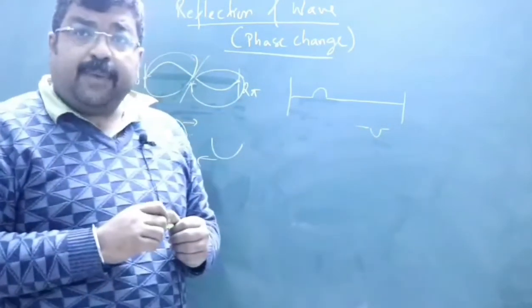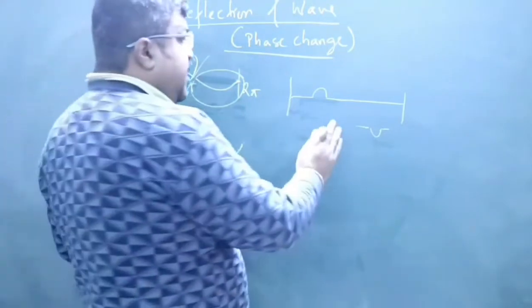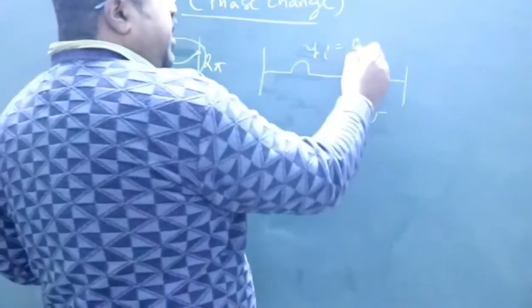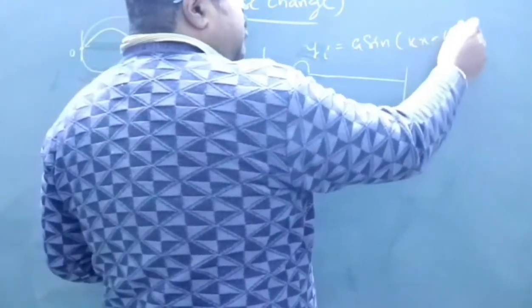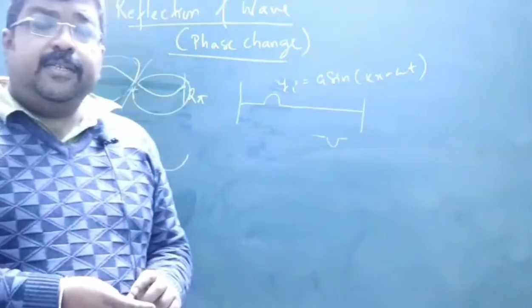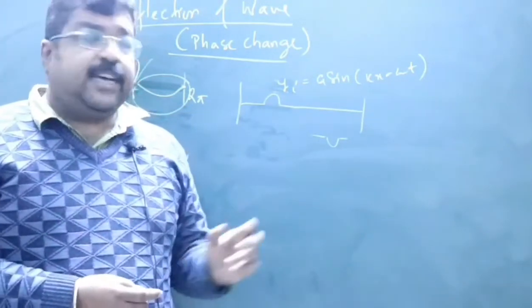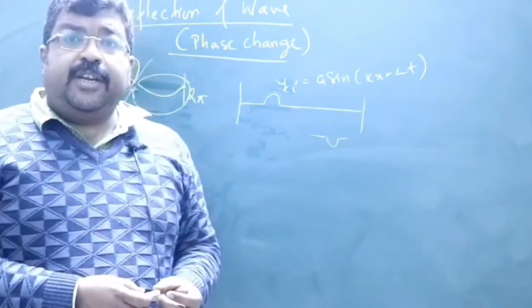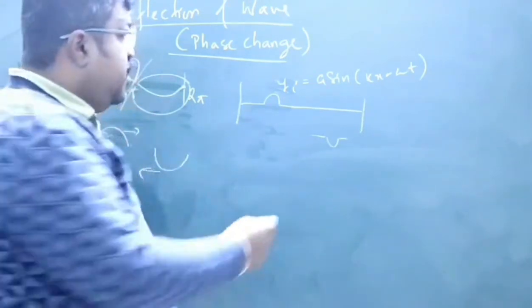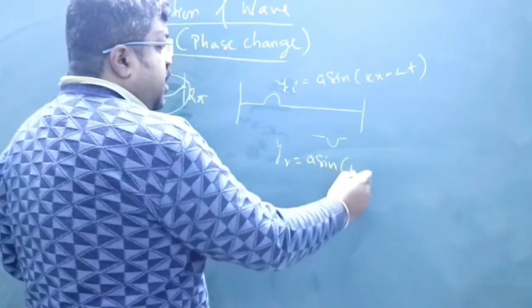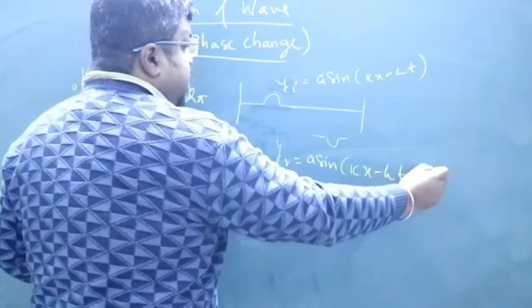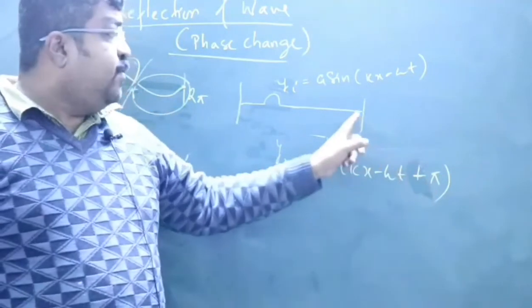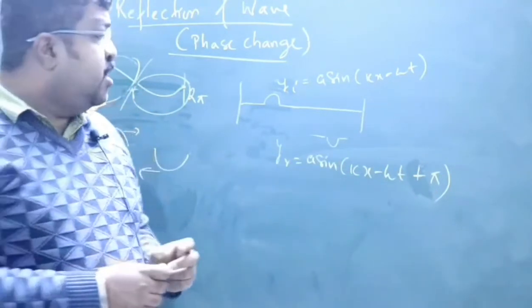This pulse can be converted like this because the two have a phase difference of pi. In mathematical language, I can write the displacement of the incident wave as y_i = a sin(kx − ωt), where the incident wave is propagating along the positive x-axis. On reflection from this fixed or rigid end, a phase change of pi is introduced, so y_r = a sin(kx − ωt + π).